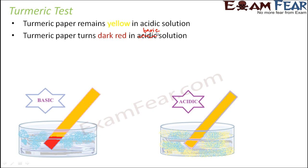Now the question that arises is: what about the neutral solution? In a neutral solution also the color will remain yellow, the color will not change. So how do we distinguish between an acidic solution and a neutral solution?